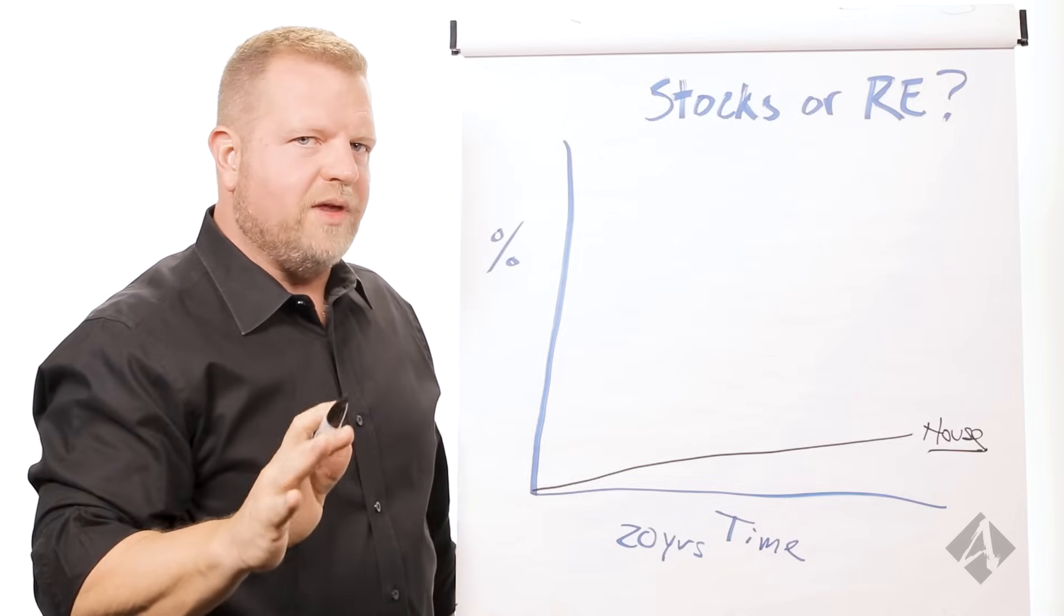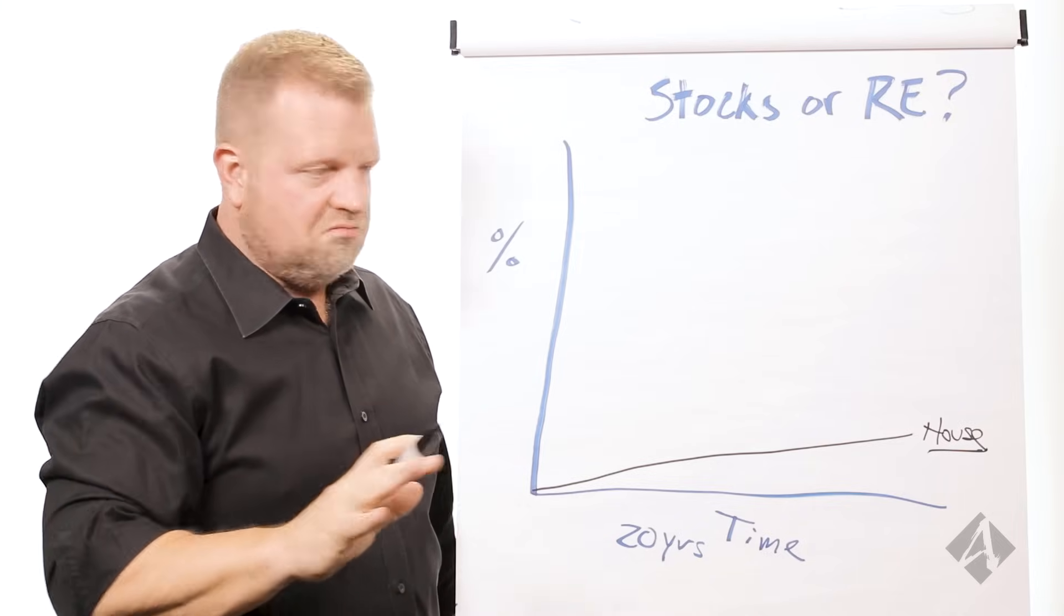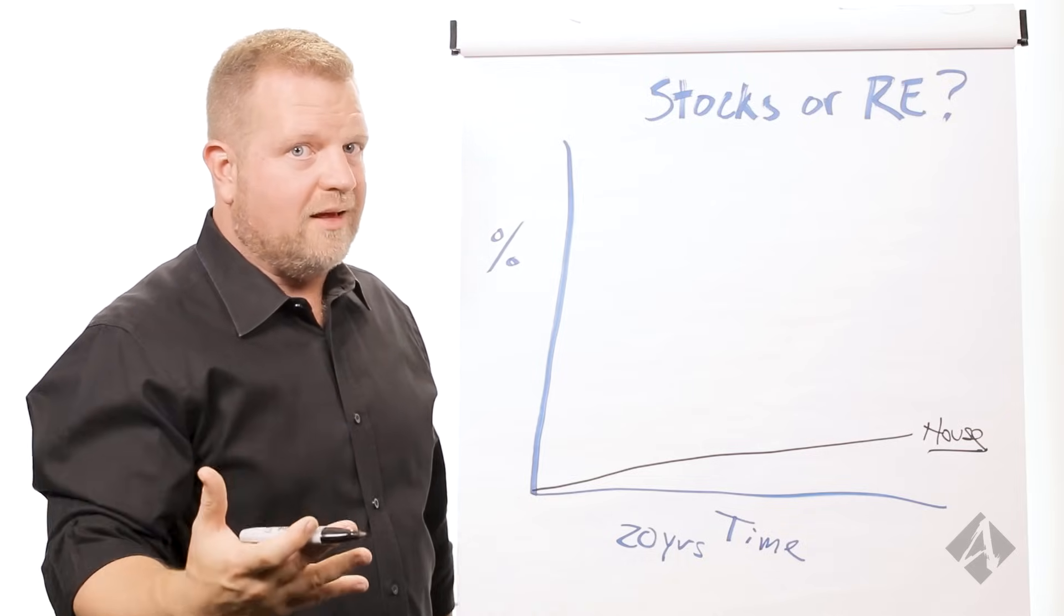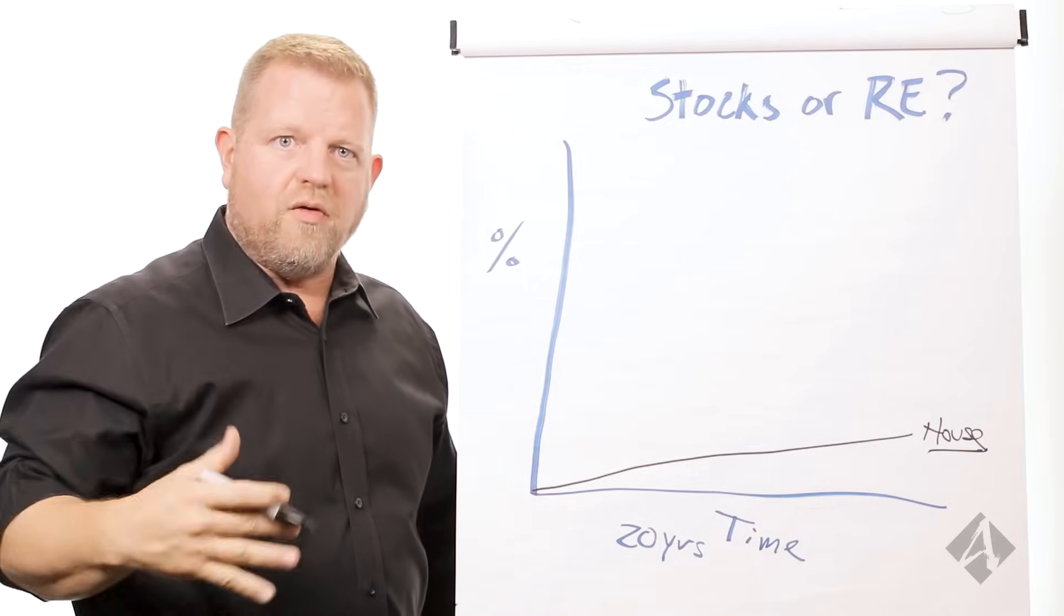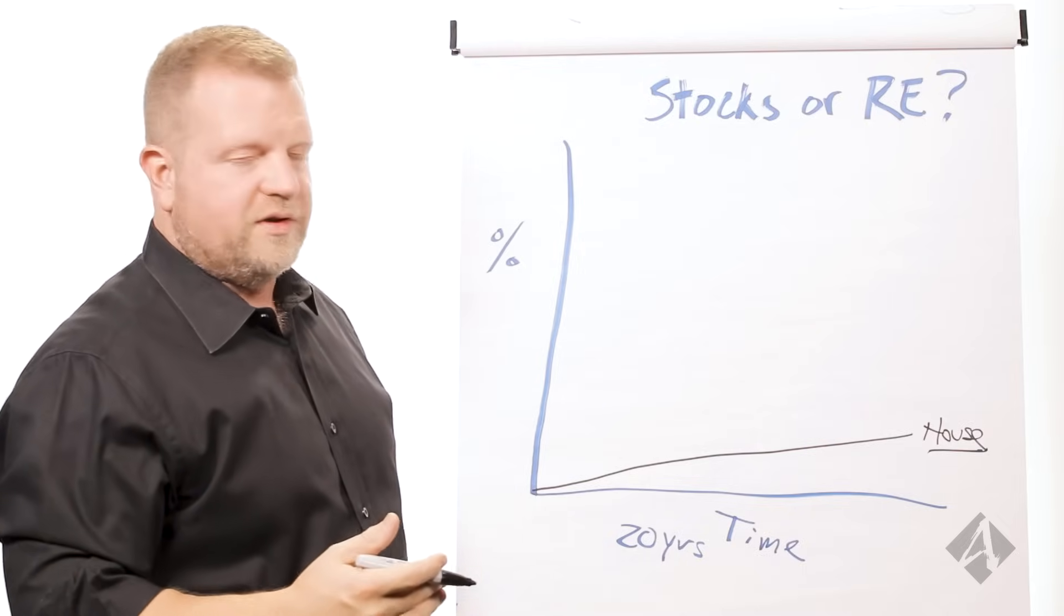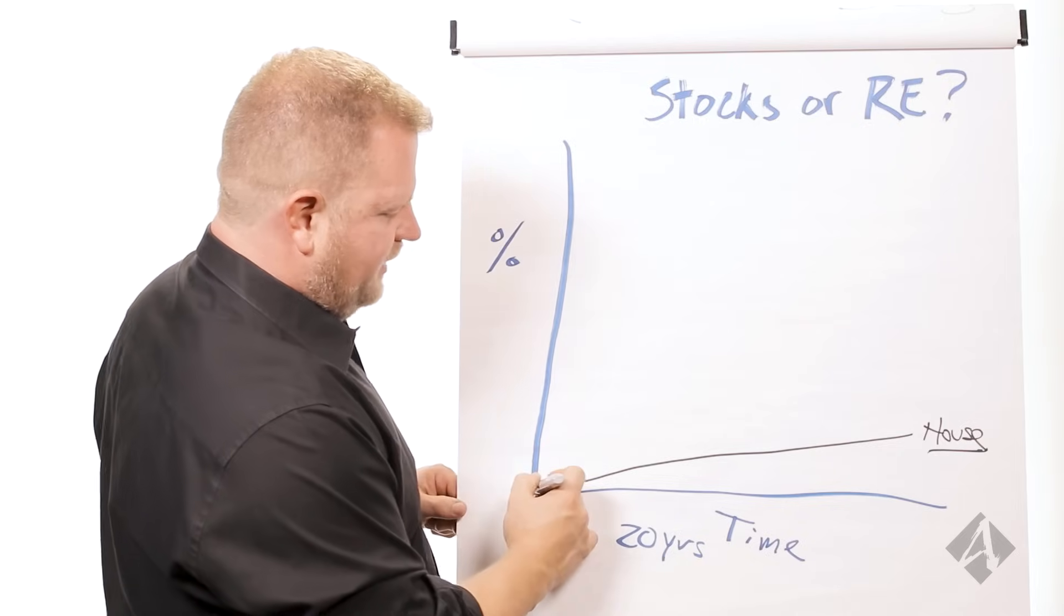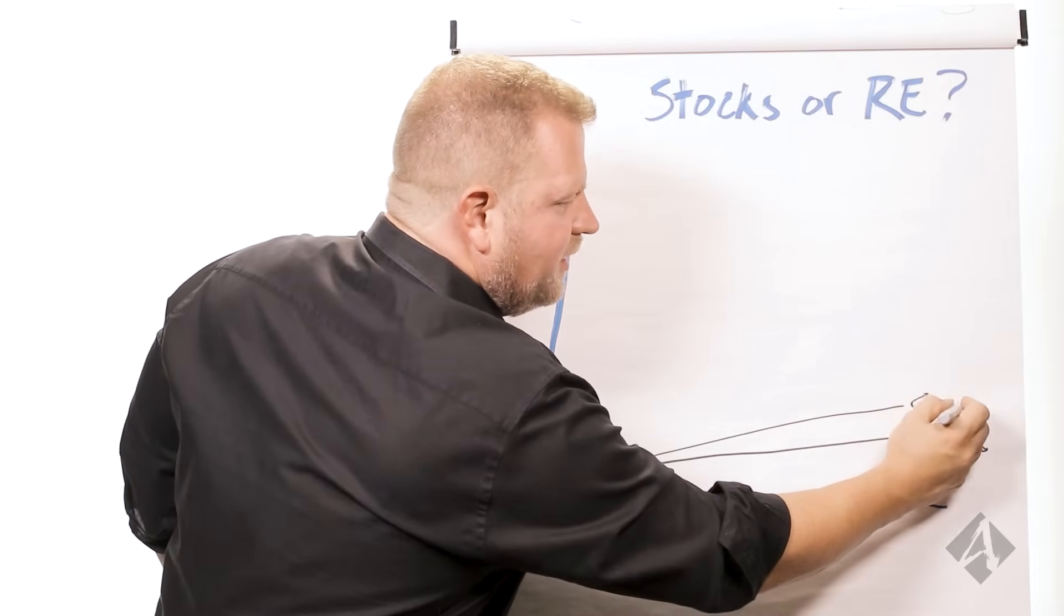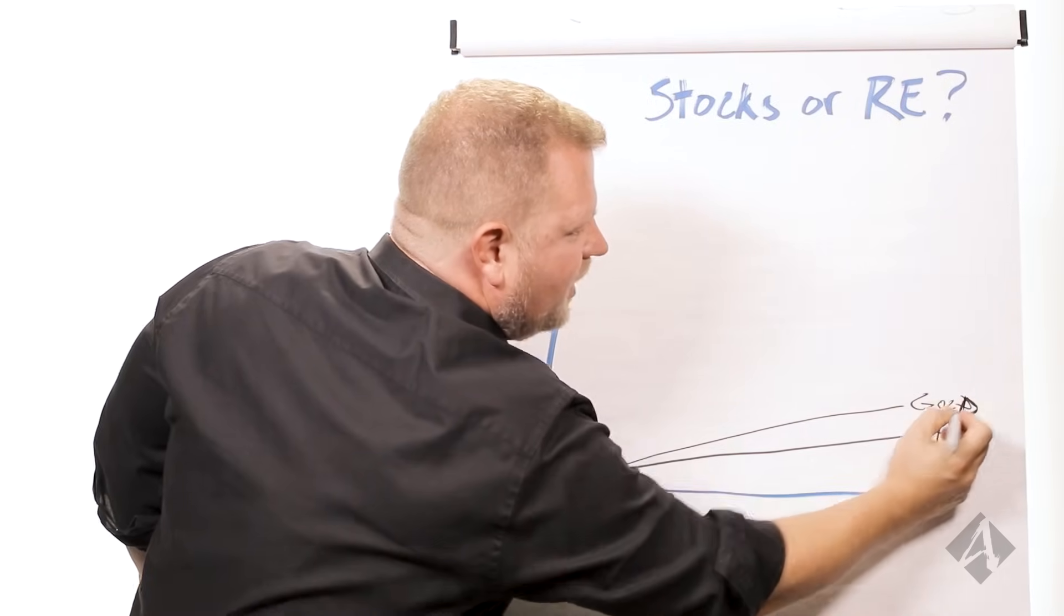It does not reach something called compounding or exponential growth ever. Like the only way you ever make money on a house too is if you sell it. And so this is what you can expect, a steady growth over the years. It's about 4% or thereabouts statistically over time. So it's okay. What's interesting, by the way, is that gold is right here along with it. Gold also kind of follows along the same line. It doesn't ever reach exponential growth.